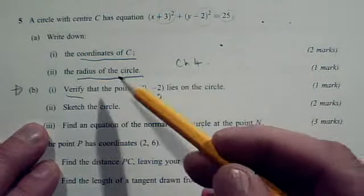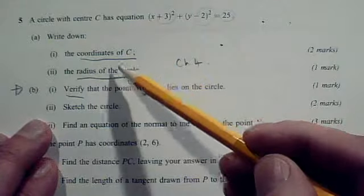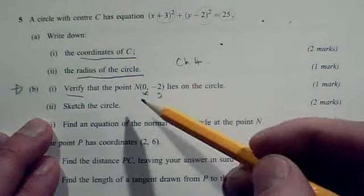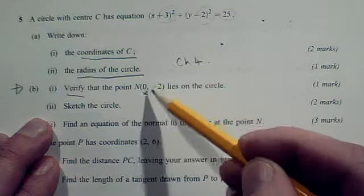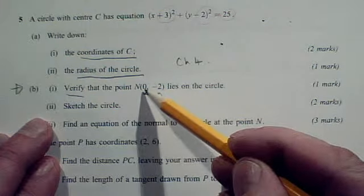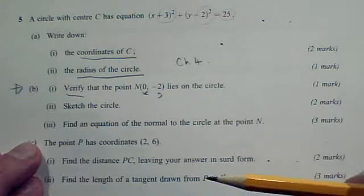To sketch the circle we will be going back to the work we've already done. But this is also a hint. So we've got the point (0, -2), so make sure that that point appears on your sketch.